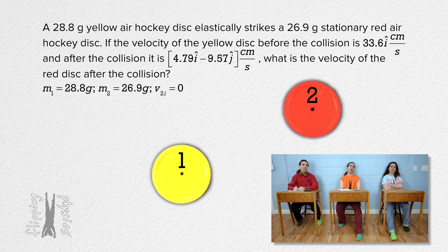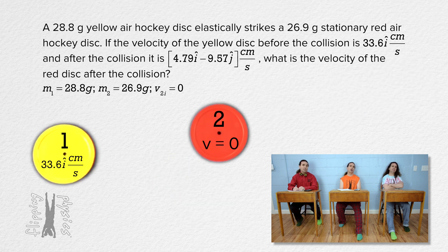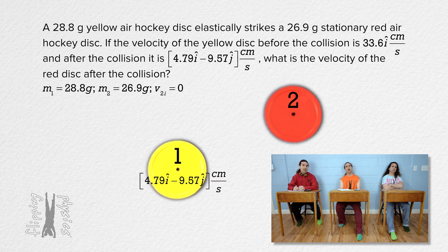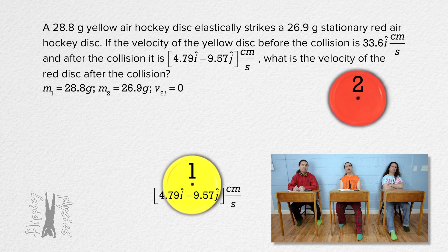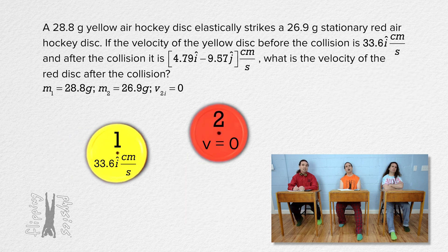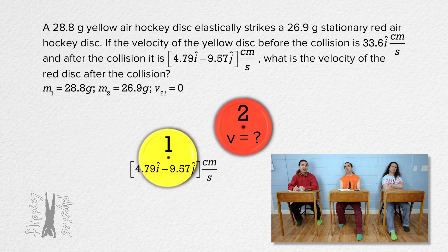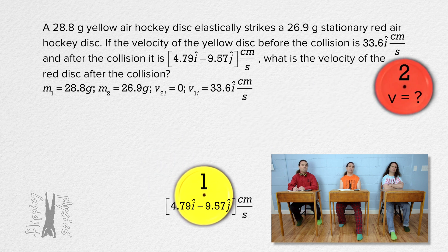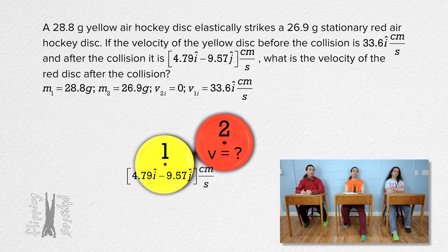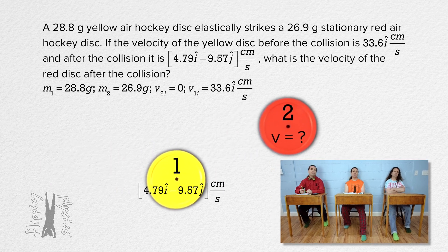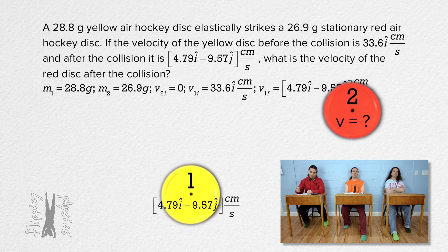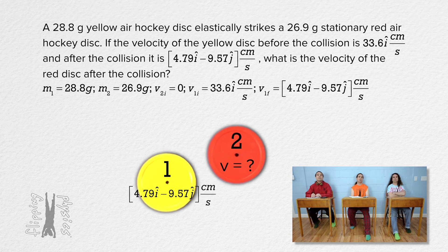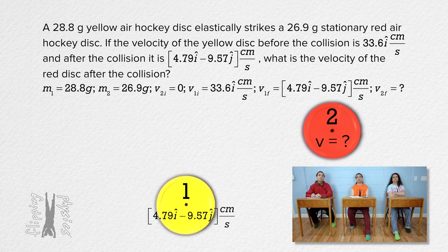If the velocity of the yellow disc before the collision is 33.6i centimeters per second, and after the collision it is 4.79i minus 9.57j centimeters per second, what is the velocity of the red disc after the collision? The velocity initial of disc one is 33.6i centimeters per second. The final velocity of disc one after the collision is 4.79i minus 9.57j centimeters per second. The final velocity of disc two equals question mark.